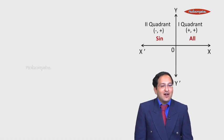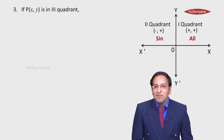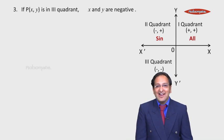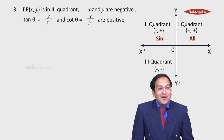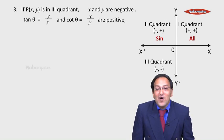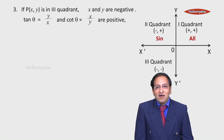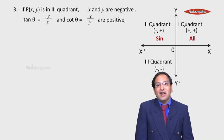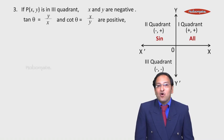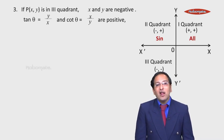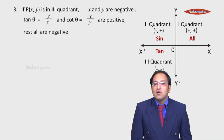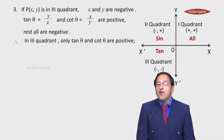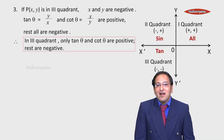Moving to the third point: if P(x, y) is in the third quadrant, then x and y are both negative. Therefore, tan θ equals y upon x and cot θ equals x upon y are both positive, because the negative signs of y and x cancel each other. Hence, in the third quadrant, only tan θ and cot θ are positive and all other ratios are negative.